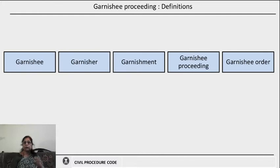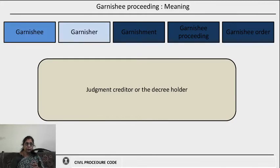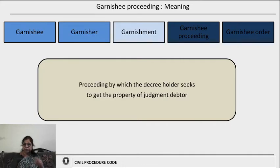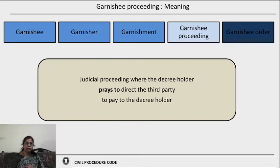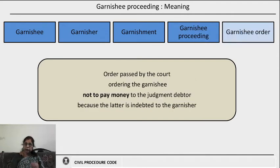Let us look into some definitions of the different terms. 'Garnishee' means the judgment debtor's debtor. 'Garnisher' means the decree holder or the judgment creditor. 'Garnishment' is the proceeding by which the decree holder wants to get the property of the judgment debtor. 'Garnishee proceeding' is a judicial proceeding where the decree holder approaches the court and prays for a direction to the third party to pay the amount to the decree holder. 'Garnishee order' is the order passed by the court in a garnishee proceeding.